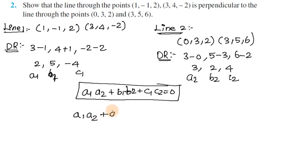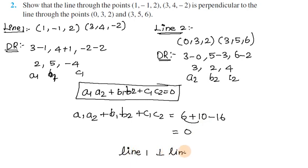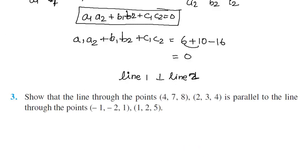Now applying the formula: A1·A2 + B1·B2 + C1·C2. A1·A2 = 2 × 3 = 6. B1·B2 = 5 × 2 = 10. C1·C2 = minus 4 × 4 = minus 16. So 6 plus 10 is 16, and 16 minus 16 is 0. Since the result is 0, Line 1 is perpendicular to Line 2.